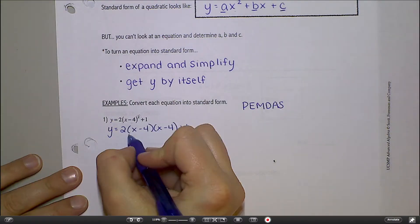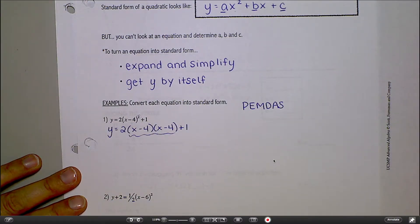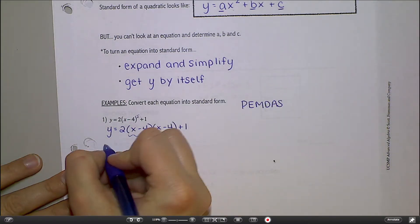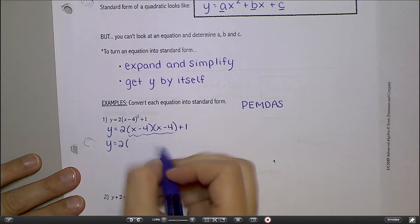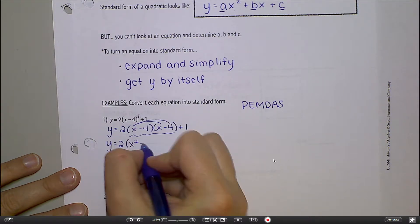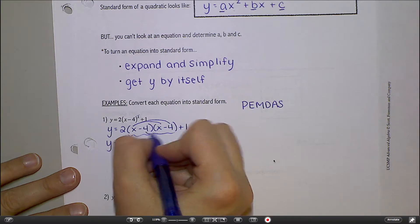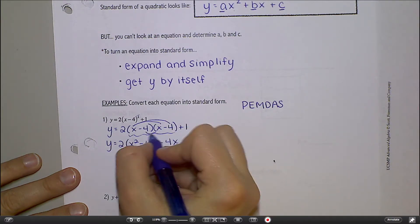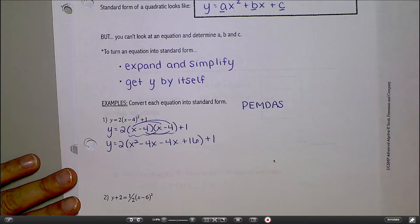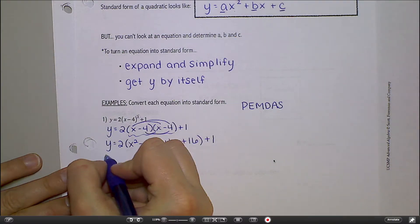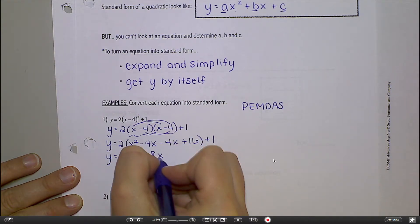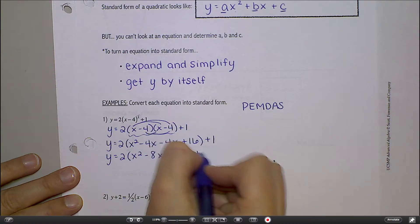Now what do I do with those two sets of parentheses? Foil. Foil, yeah. I'm going to leave the 2 and the 1 alone. I'm going to just leave them how they are for now. So Y equals 2 and then I'm going to start foiling. So X times X is X squared. Next would be minus 4X. Inside would be minus 4X. And then negative 4 and negative 4 would be positive 16. Let's combine my like terms in the middle. 2 times X squared minus 8X plus 16 and then a plus 1 on the outside.